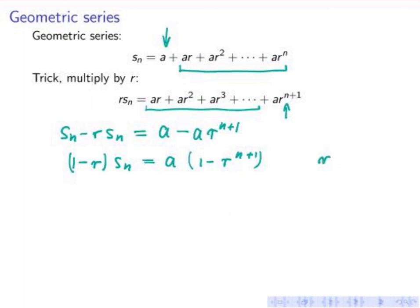And now I assume that r is not equal to 1. Then we can divide by 1 minus r, and S_n is a times 1 minus r to the n plus 1 divided by 1 minus r.